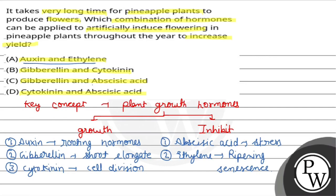Now, when we talk about flowering, ethylene is a good point — it promotes flowering. In early fruits and early leaves, ethylene keeps them from early germination, but in matured tissues, ethylene will induce flowering. So auxin and ethylene together will induce flowering — this is correct.